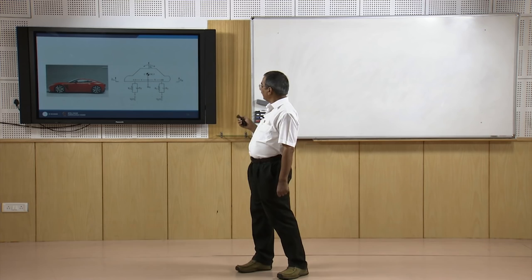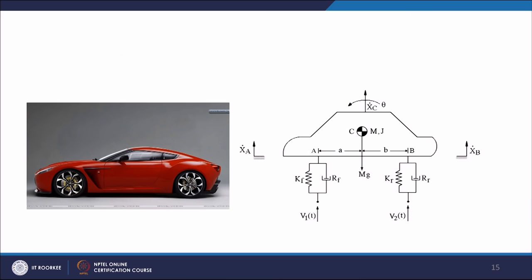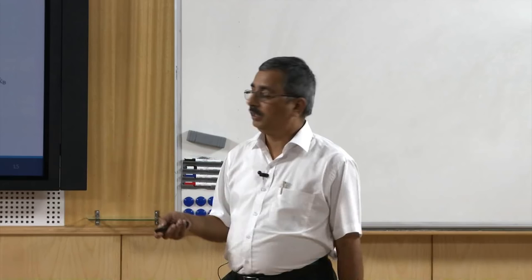As another example, consider a simple car as a physical system. This physical model of the car can be converted into an engineering model where the front and rear suspensions are represented, along with the car body having car mass and polar moment of inertia, modeling both vertical motion and pitching of the car. Using any modeling method, we can then obtain the mathematical expression for this model.